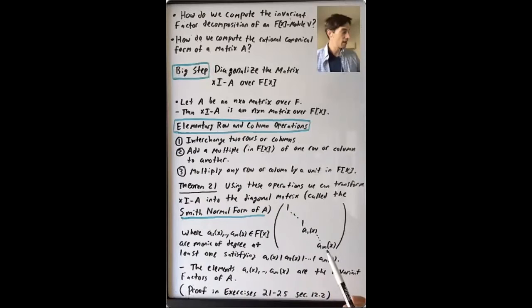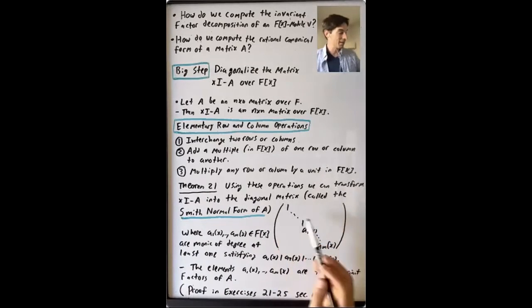It has some number of ones along the diagonal. Then it has a₁(x), a₂(x) up to aₘ(x), where these polynomials a₁(x) up through aₘ(x) are in F[x]. They're each monic polynomials of degree at least one, and they satisfy the divisibility relations: a₁ divides a₂, a₂ divides a₃, and so on.